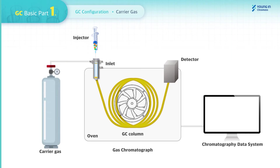Once each module is configured into a GC system, it can show how the flow goes through a GC. The Carrier Gas flows into the column passing through the inlet. When the sample is introduced into the inlet, the Carrier Gas sweeps the sample onto the column.